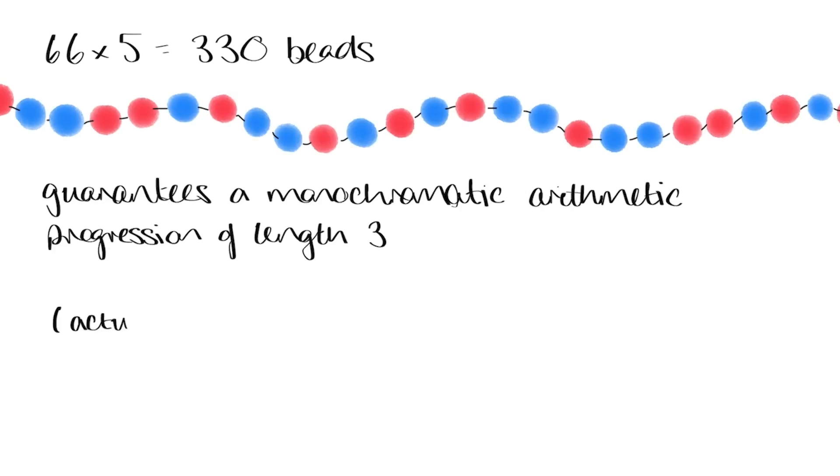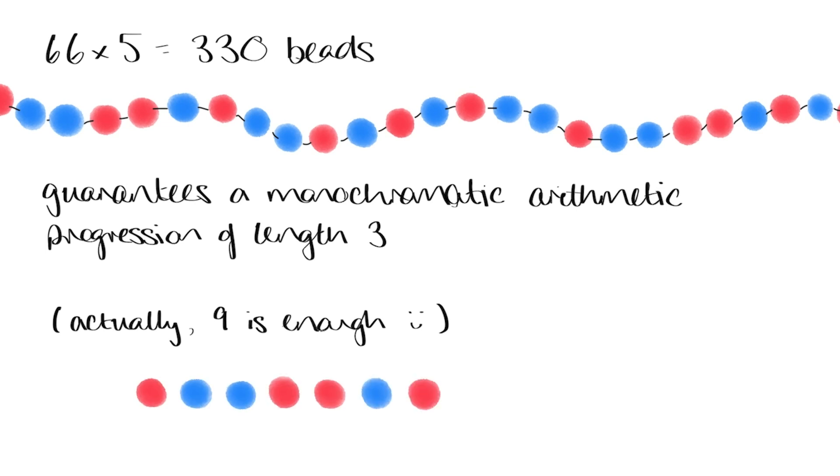It turns out that actually just 9 beads is enough to guarantee a monochromatic progression of length 3, which can be verified by just checking all the possible cases. So our proof was really not the most efficient. But if we're only interested in whether there is some upper limit on the length of the chain before we're forced into a monochromatic progression of length 3, and not in exactly what the value of this upper limit is, then what we've done is okay, because we've shown that the upper limit does exist.